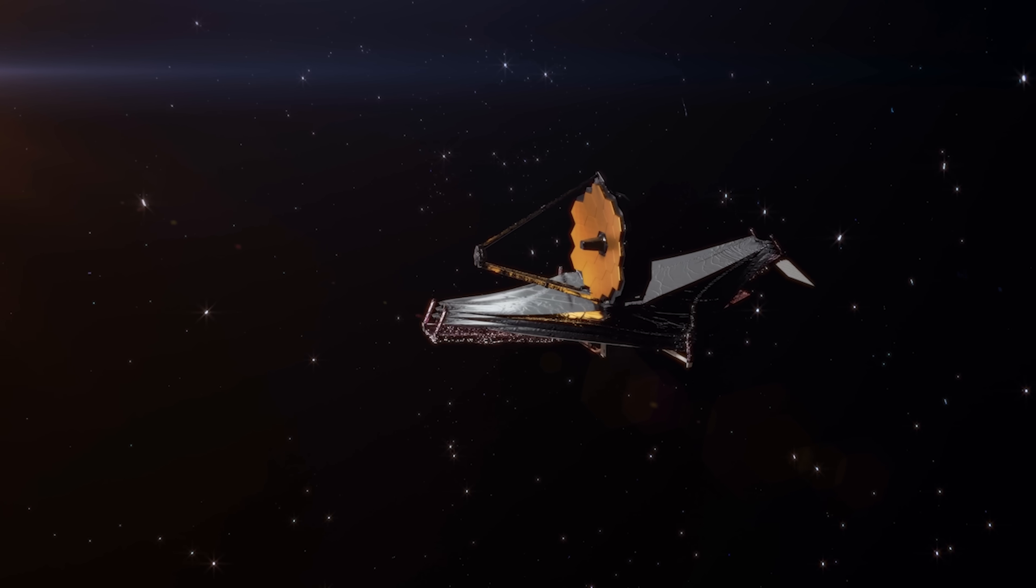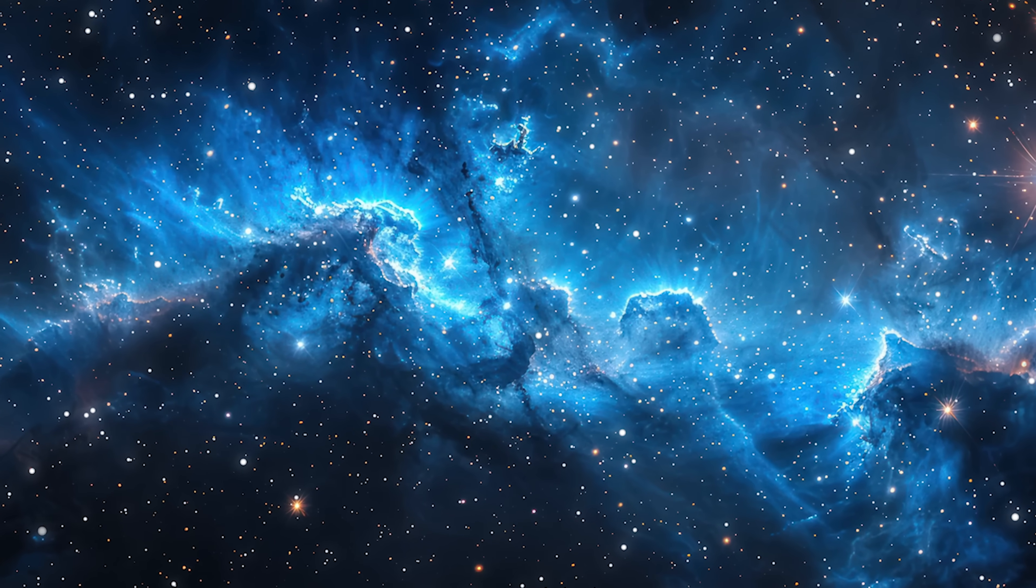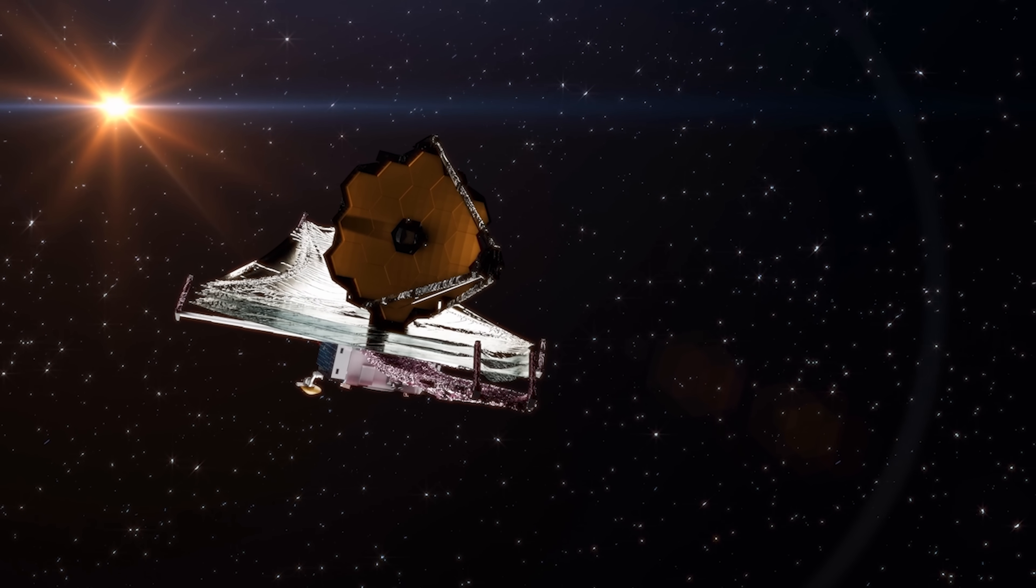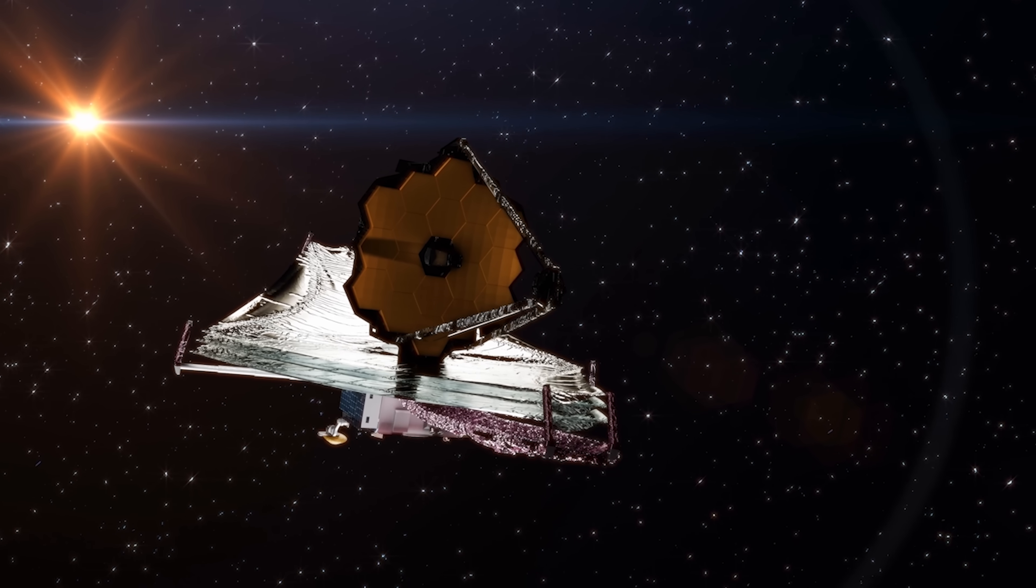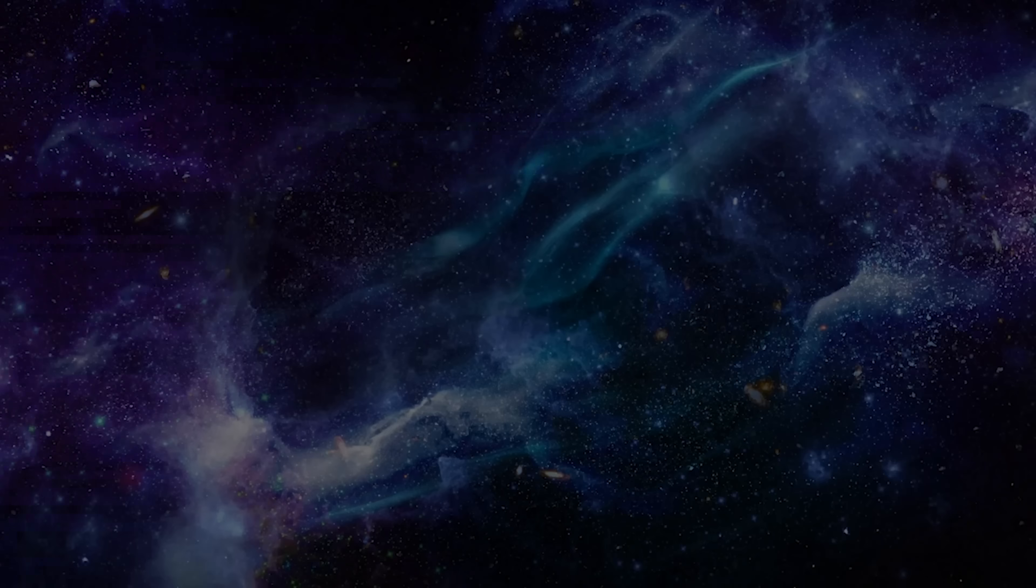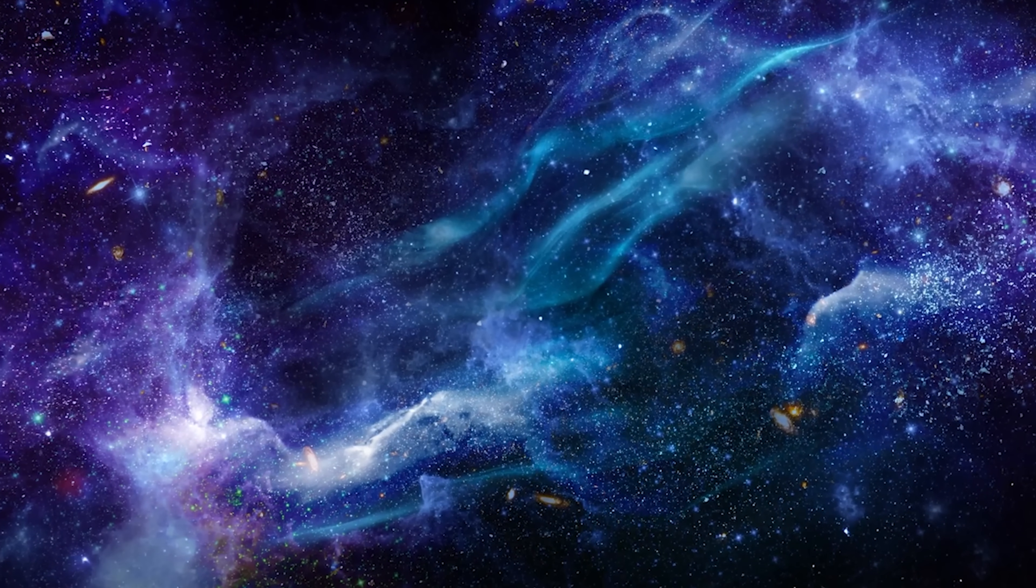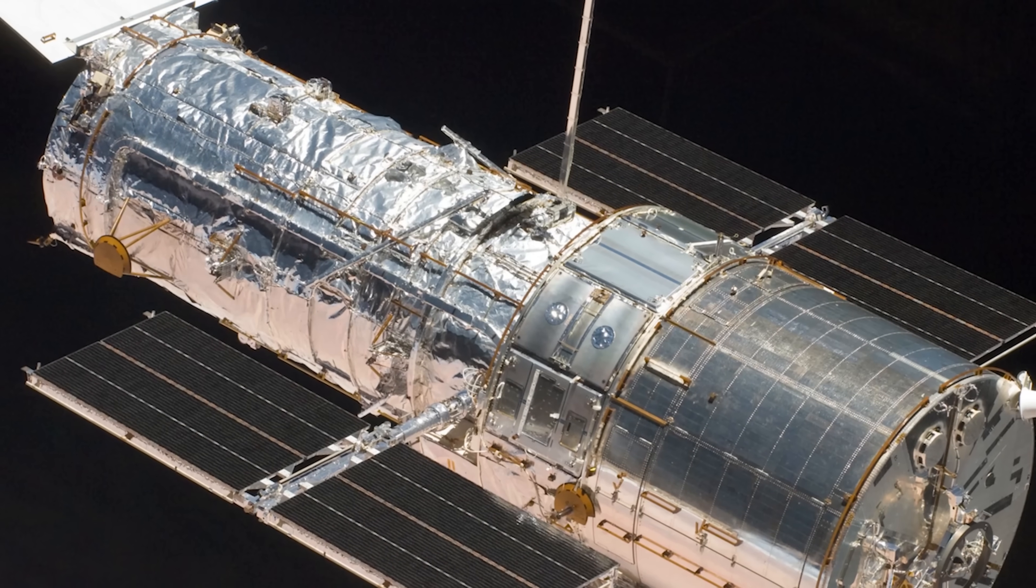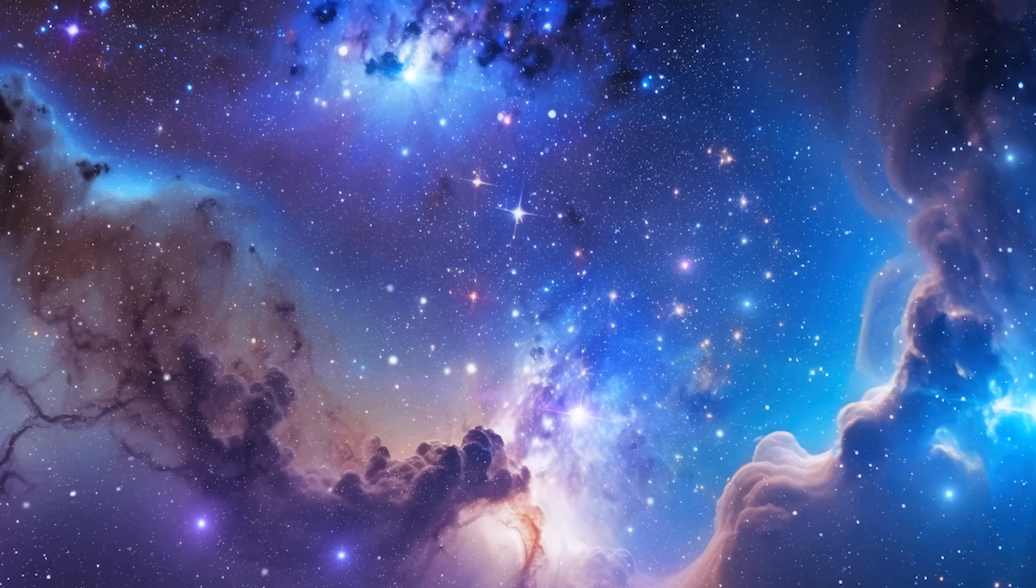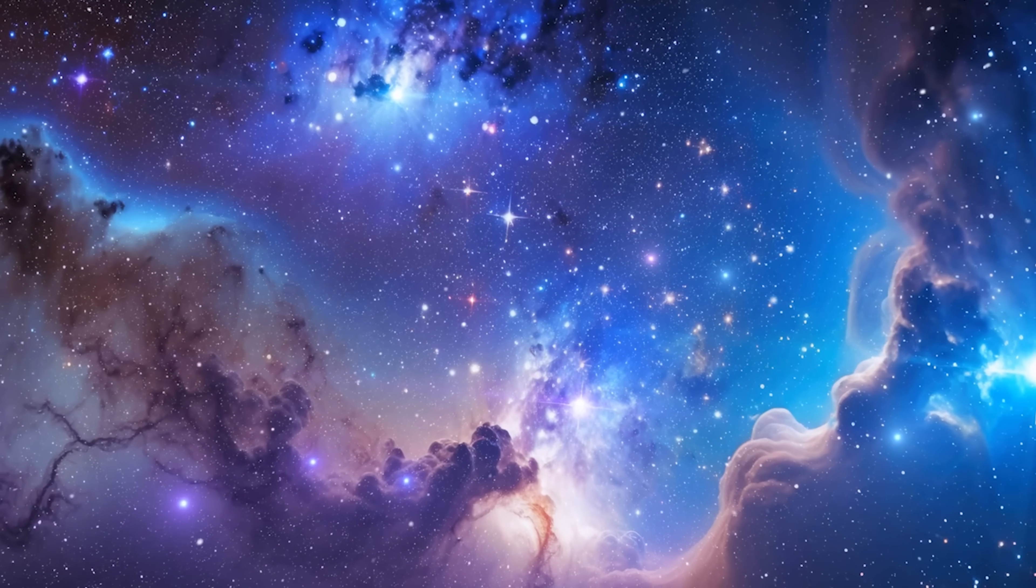But here's the kicker. The Webb Telescope was meant to be the final judge. With its infrared vision, it can see through cosmic dust with unprecedented clarity. Everyone expected it to find the error. It did the exact opposite. Adam Rees and his team used the Webb Telescope to recheck the measurements. The result? The Webb Telescope data aligned perfectly with Hubble's. There was no error. The local universe is stubbornly expanding at 73. This is what turns a discrepancy into a full-blown scientific crisis. As Rees himself has noted, with NASA's two flagship telescopes confirming the same result, the problem isn't with the measurements.